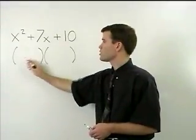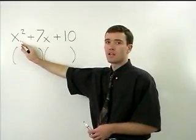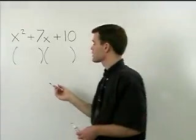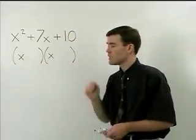Well, the first term in each binomial will be a factor of the x squared. Since x squared factors is x times x, we use x as the first term in each binomial.